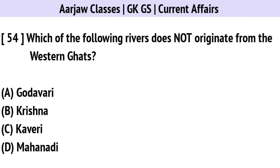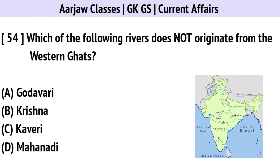Which of the following rivers does not originate from the Western Ghats? The correct option is D — Mahanadi.